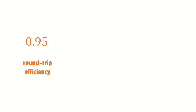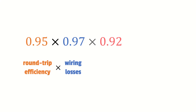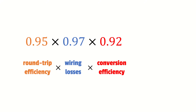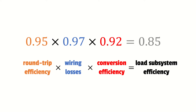Combining all system losses into a single factor: 0.95 for round trip efficiency, multiplied by 0.97 for wiring losses, multiplied by 0.92 for conversion efficiency, gives an overall load subsystem efficiency of 85% or 0.85.